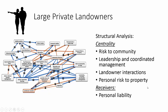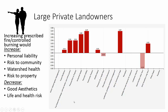Large private landowners were primarily concerned about risks to the community, leadership from managers involved in controlled burns, and how different landowners interact with one another. The personalities of people who own large tracts of land, how that personality led to how they manage their land, and how that management led to overall risk of wildfire impacts were key themes. They were very concerned about personal liability. When we run the same scenario on their model, they do see the benefits — watershed health increases — but it comes at the cost of increased personal liability, increased risks to the community, and an initial negative impact on the aesthetics of the area.